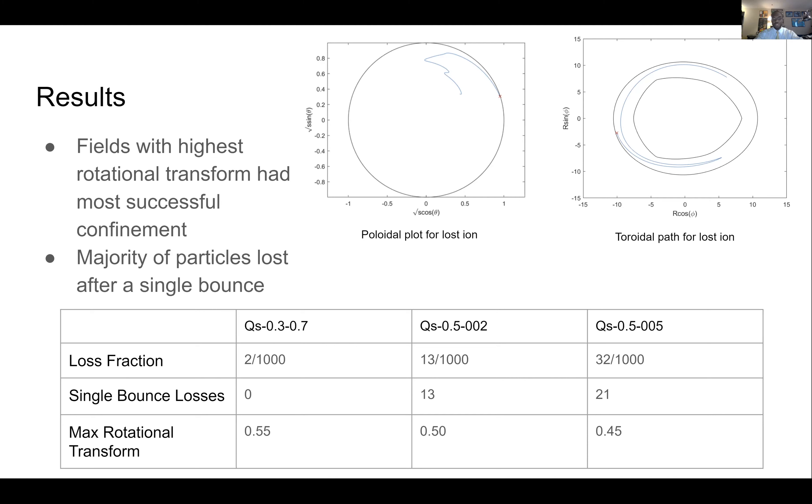And it turns out what prevents this, or it seems to correlate with this, is rotational transform. The more rotational transform, the less performance. And in our highest rotational transform reactor, we have no ripple, we have no single bounce losses, and a very low loss fraction.